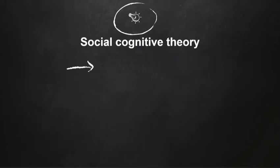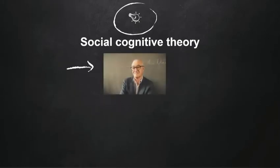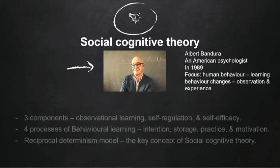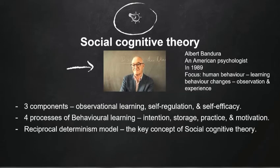Now, we are talking about Social Cognitive Theory. This is the theory developed by Albert Bandura, an American psychologist, who developed this theory in 1989, focusing on human behavior, learning behavior change, observation, and experience. It has three components in Social Cognitive Theory: the first one is observational learning, self-regulation, and self-efficacy.